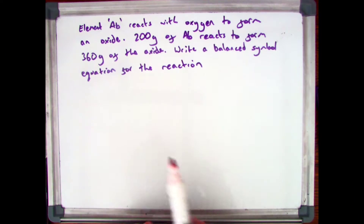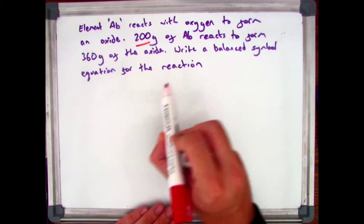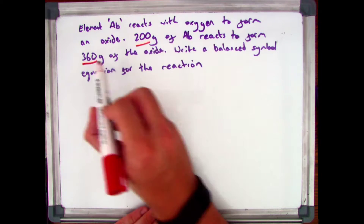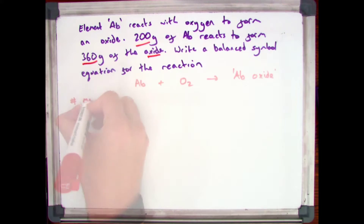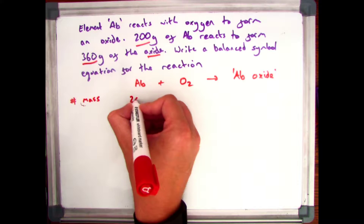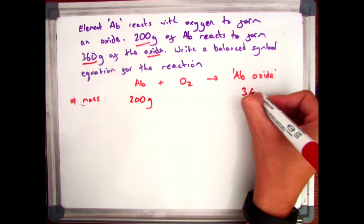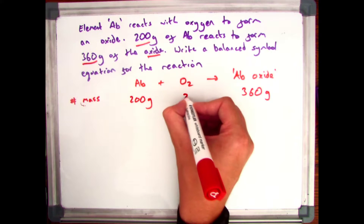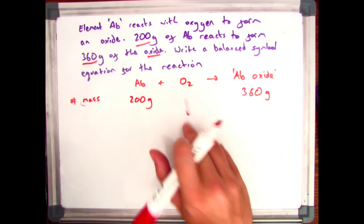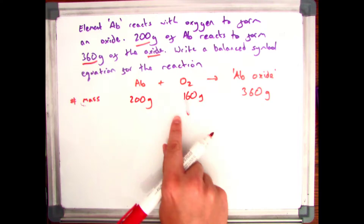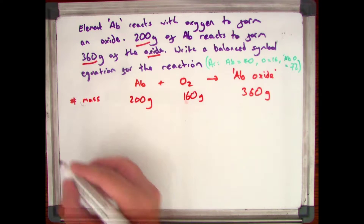Example two says element AB reacts with oxygen to form an oxide. 200 grams of AB reacts to form 360 grams of the oxide. Write a balanced symbol equation for the reaction. I've been told I have 200 grams of element AB and 360 grams of my AB oxide, but I don't know how much oxygen I've got. Since there's only one product, I take them away and get 160 grams of oxygen.